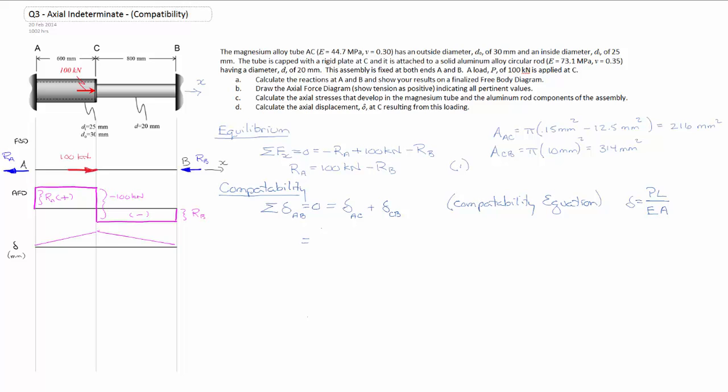Going down here using that equation, substituting it in, we know that this is the same as PAC times LAC divided by EAC times AAC plus PCB times LCB divided by ECB times ACB equals zero.